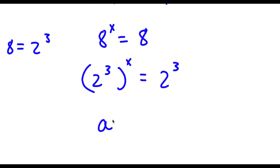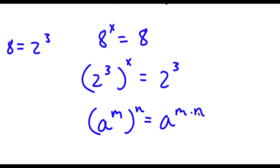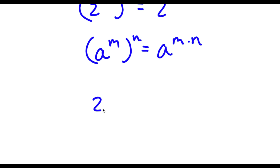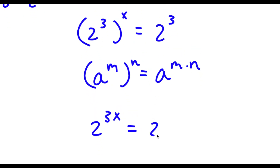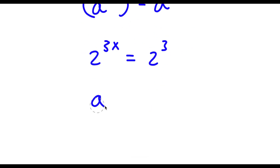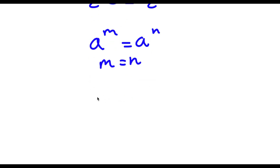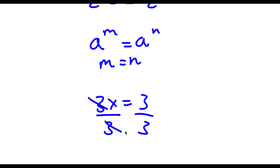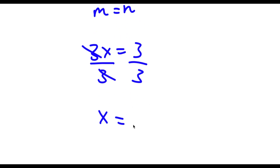Now if I have something in the form a to the power of m to the power of n, this is equal to a to the power of m times n. So 2 to the power of 3 to the power of x equals 2 to the power of 3x, which is equal to 2 to the power of 3. If a to the power of m equals a to the power of n, then m equals n. So 3x is equal to 3. Dividing both sides by 3, x is equal to 1.